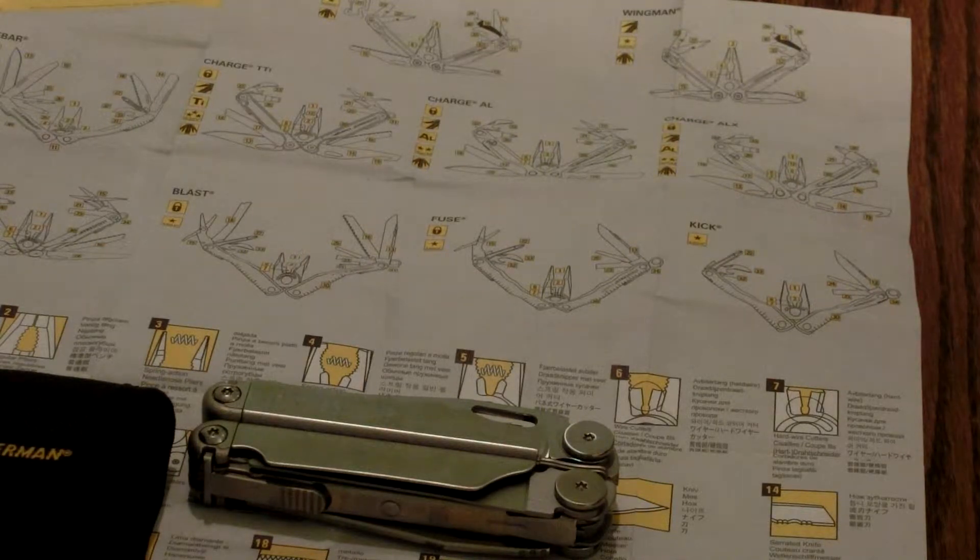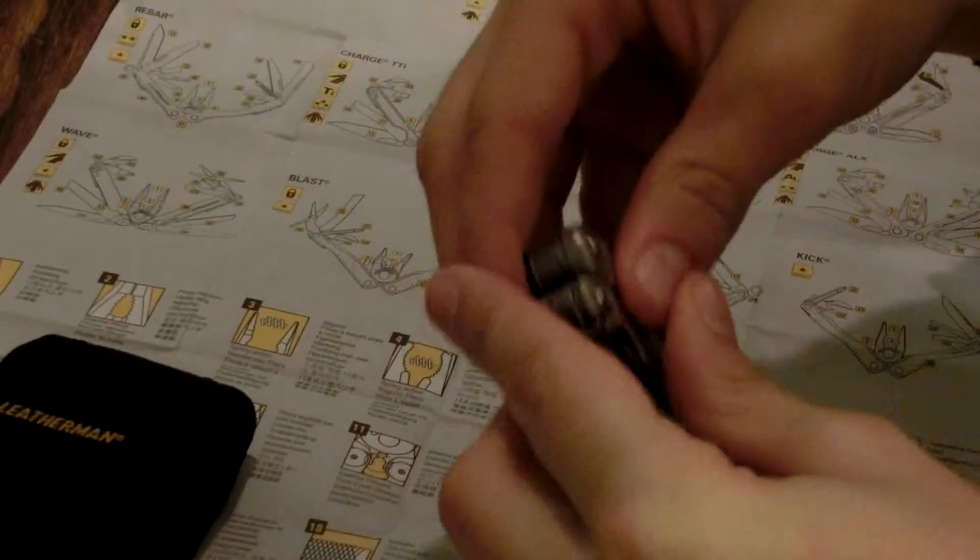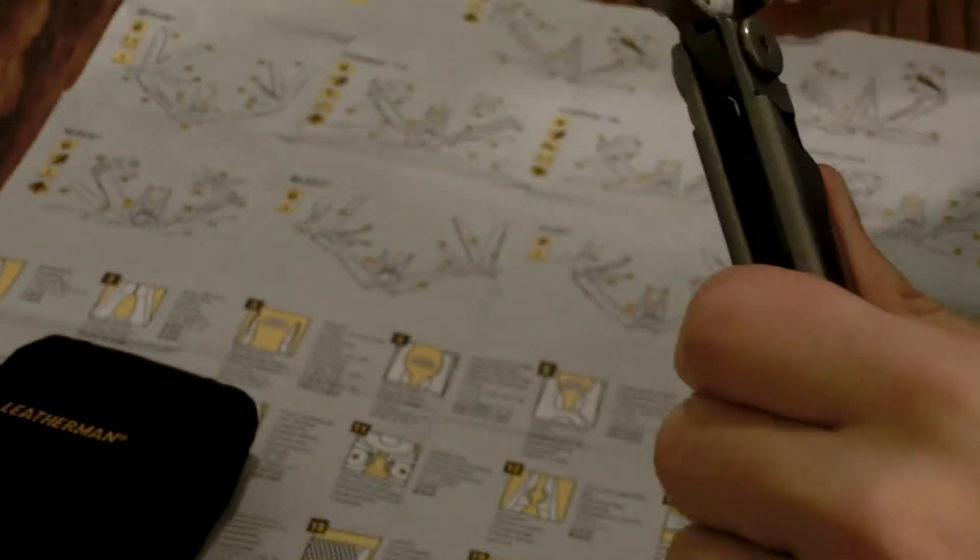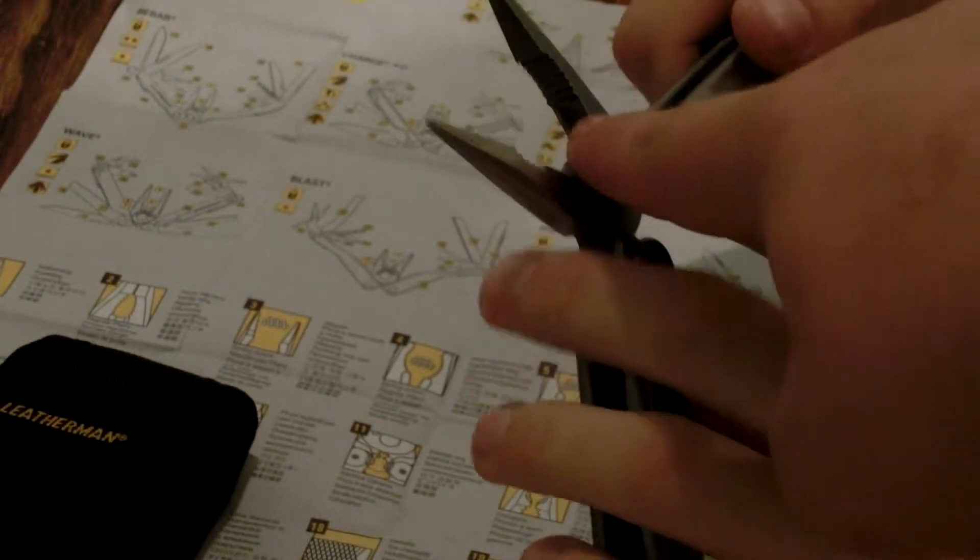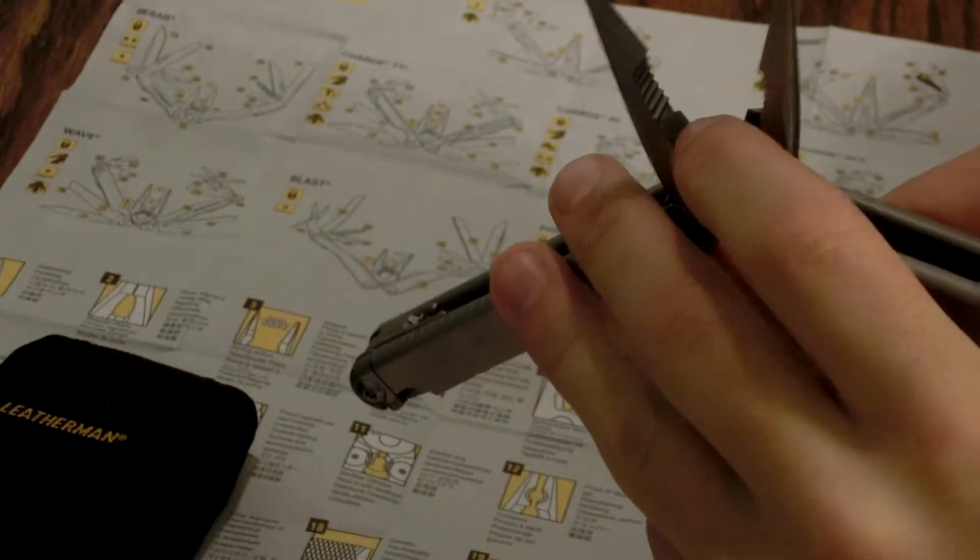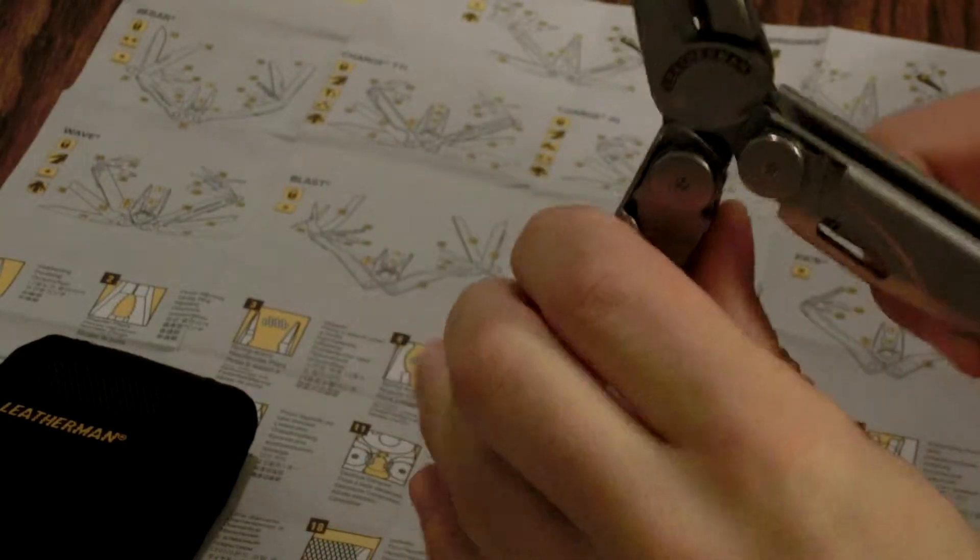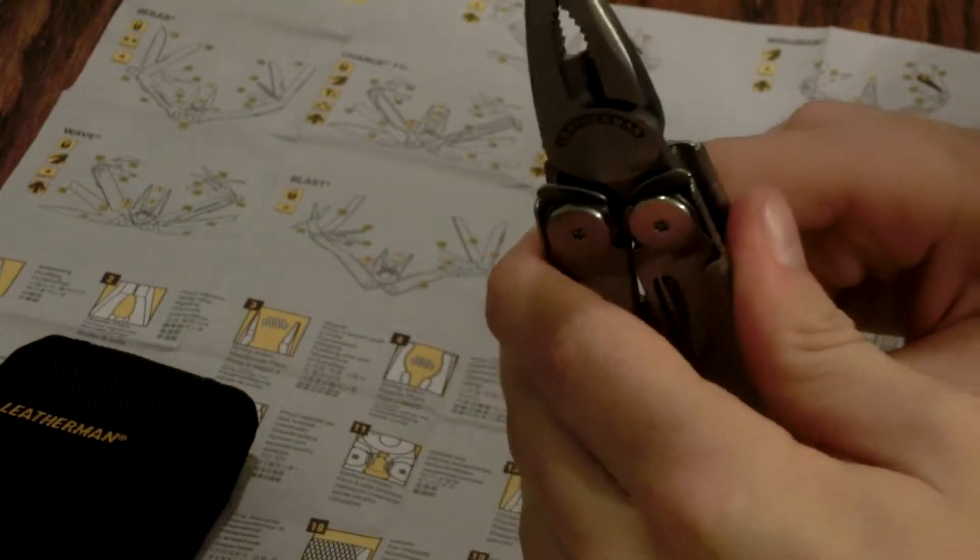It has stronger pliers with built-in cap crimper. I'll try to find that, it's at the bottom, the little groove right there under the blade. It has larger 2.9 inch knives and longer wire cutters than previous wave models.